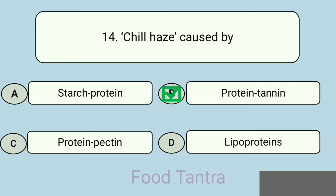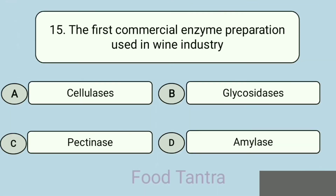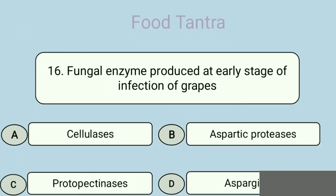Question 15: The first commercial enzyme preparation used in the wine industry — Option A: Cellulases. Option B: Glycosidases. Option C: Pectinases. Option D: Amylase. Correct answer: Pectinases. Question 16: Fungal enzyme produced at early stage of infection of grapes — Option A: Cellulases. Option B: Aspartic proteases. Option C: Protopectinases. Option D: Asparaginase. Correct answer: Aspartic proteases.